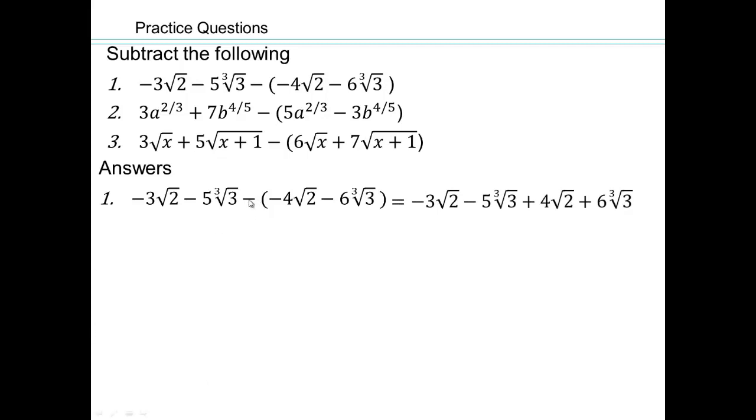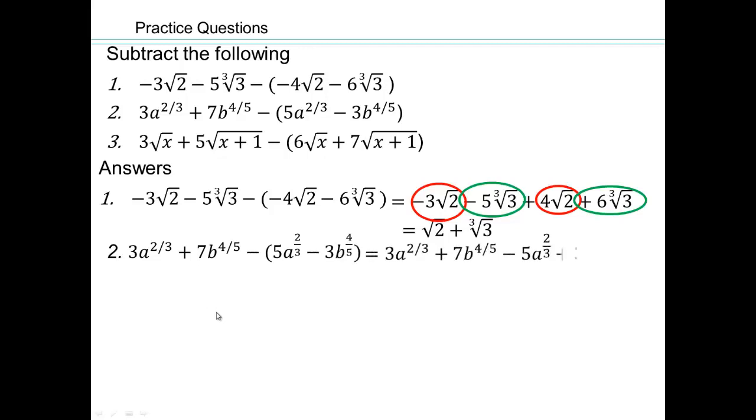The first thing we've done is take additive inverse of all of that. Additive inverse of -4√2 would be +4√2. Additive inverse of -6∛3 will be +6∛3. Now it's just adding like terms. -3 + 4 gives me 1√2. -5 + 6 is positive 1∛3. Let's do this next one on your own. Whenever you see negative of anything, that's additive inverse of that, and you can do the addition or subtraction as necessary. Check if you got the last one correct.